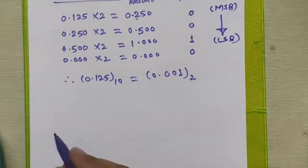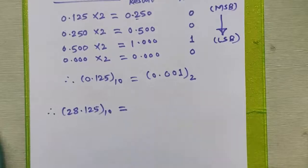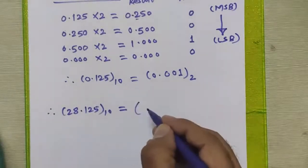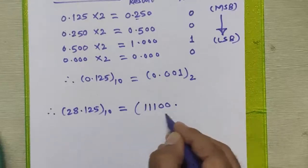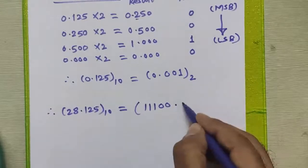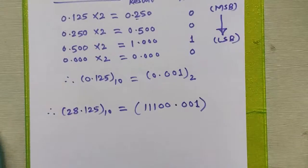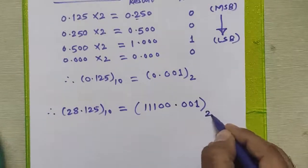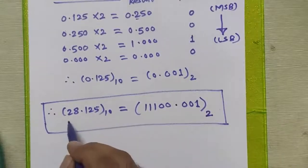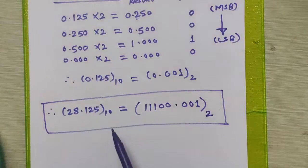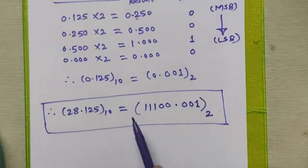To get our actual result for the given number 28.125 in decimal, we need to combine the results of both sections — integral part as well as fractional part. The integral part result was 11100 (that is our 28), and the fractional part result is 0.001. Putting it together after the decimal point, 28.125 decimal is equivalent to 11100.001 in binary. We combine the integral part result and the fractional part result to get our final binary equivalent.